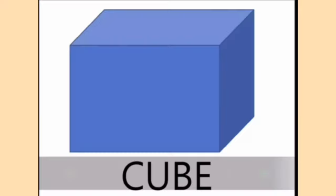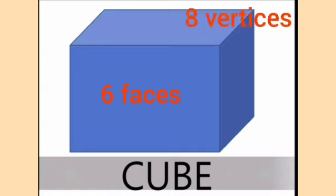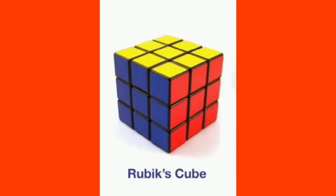A cube is a three-dimensional shape. It is a solid shape and it is different from a two-dimensional shape. A cube has six faces and eight vertices, which are also known as corners. Let's see some examples of a cube: a Rubik's cube, which is a plastic cube with multi-colored squares.